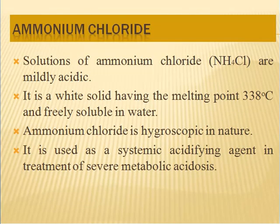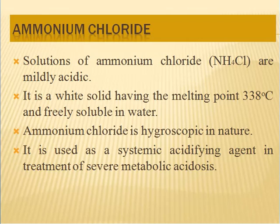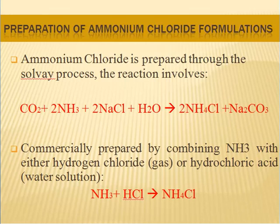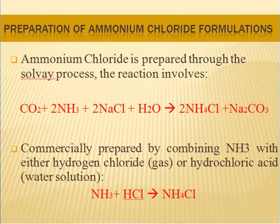The next topic is ammonium chloride, another acidifying agent. Its solution is mildly acidic and its synonym is sal ammoniac. It is a white solid, hygroscopic in nature, odorless, with a melting point of 338°C, freely soluble in water and glycerol, and sparingly soluble in alcohol. Ammonium chloride is prepared through the Solvay process, where carbon dioxide reacts with ammonia in the presence of sodium chloride to give ammonium chloride along with sodium carbonate. It is also commercially prepared by combining ammonia with hydrogen chloride gas or hydrochloric acid.